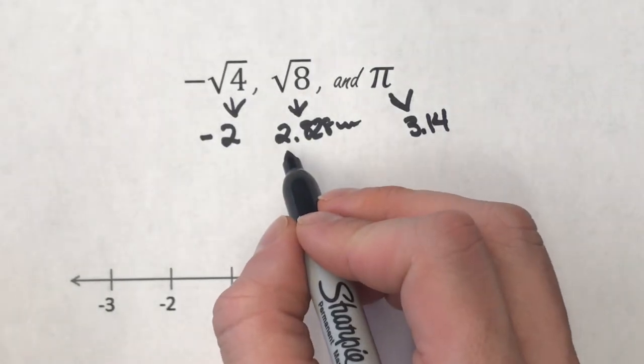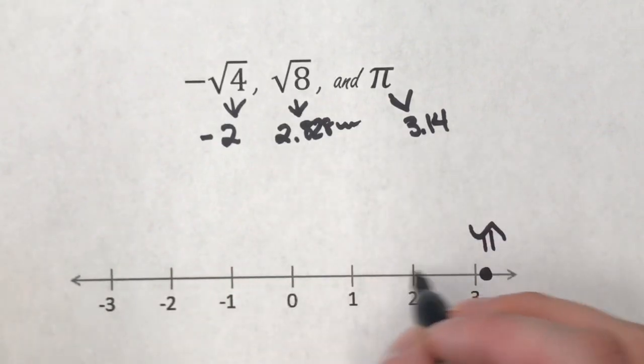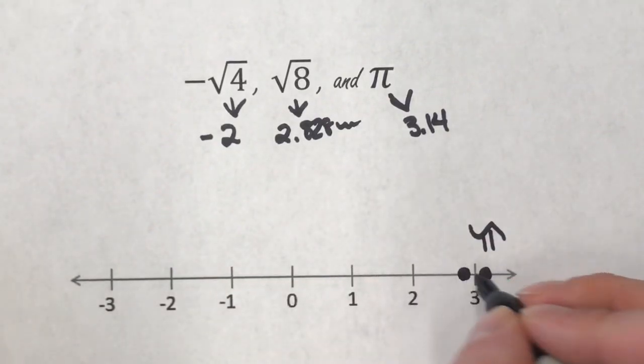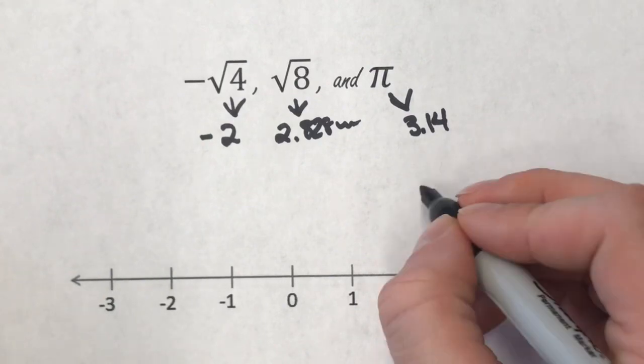Square root of 8 is 2.8, so I'm going to put it closer to the 3, in between the 2 and the 3, but closer to the 3.